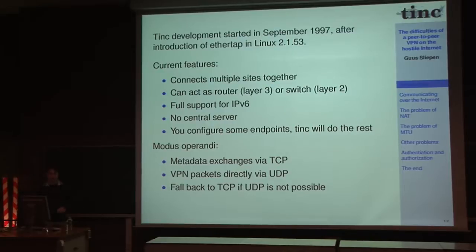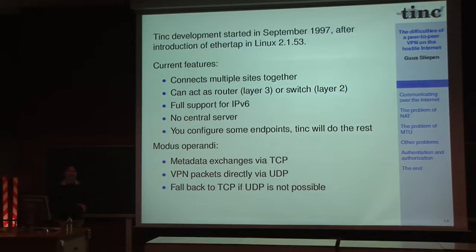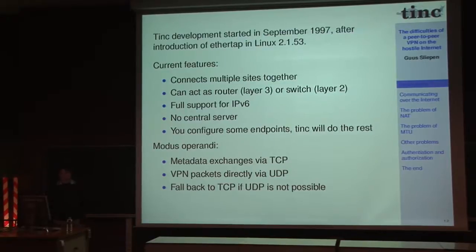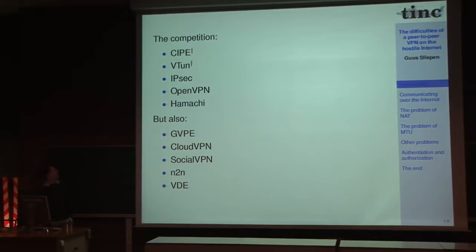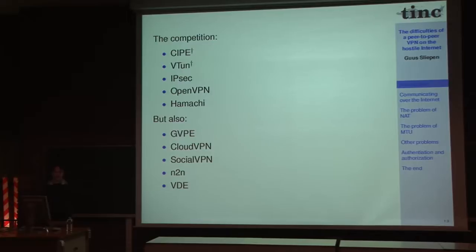The daemons connect via TCP and exchange data. There were other early VPN projects in the kernel, such as VTN, which started around the same time as tinc, but those projects are now dead. Well-known alternatives include IPSec and OpenVPN. There is also Hamachi, a closed-source commercial product — kind of like a Skype for VPN — which is peer-to-peer and shares many features with tinc.